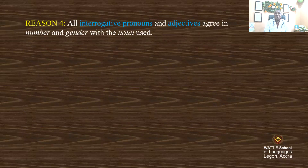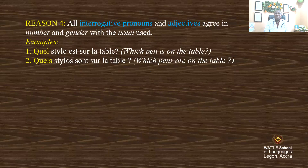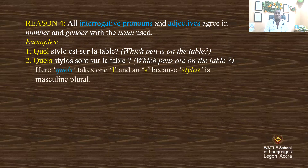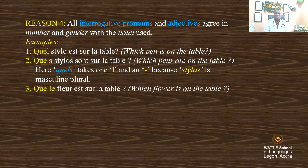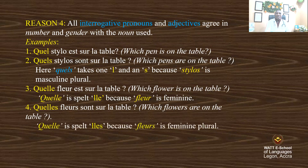Reason four: all interrogative pronouns and adjectives agree in number and gender with the noun used. Example: 'Quel stylo est sur la table?' — which pen is on the table? Since stylo is masculine singular, 'quel' remains as is. 'Quels stylos sont sur la table?' — which pens are on the table? Quel takes an S because stylo is masculine plural. 'Quelle fleur est sur la table?' — which flower is on the table? Quelle is spelled Q-U-E-L-L-E because flower is feminine. 'Quelles fleurs sont sur la table?' — which flowers are on the table? Quelles is spelled Q-U-E-L-L-E-S because flower is feminine plural.